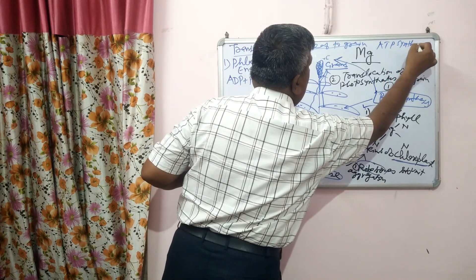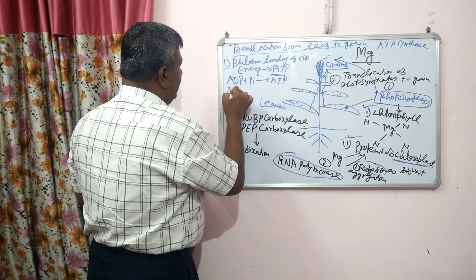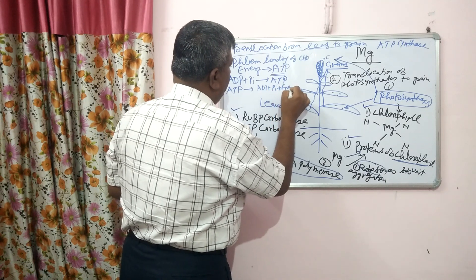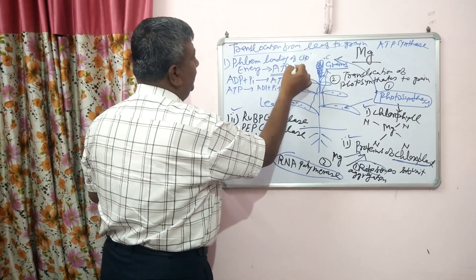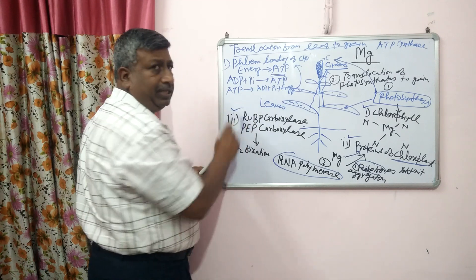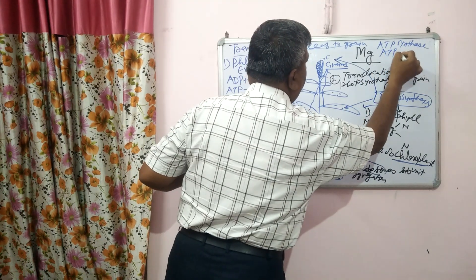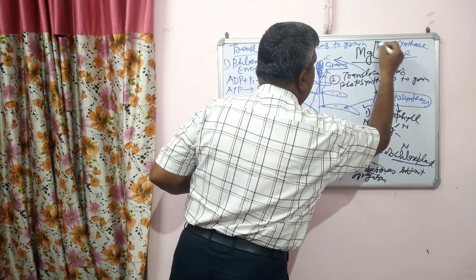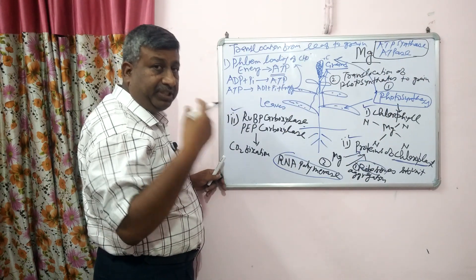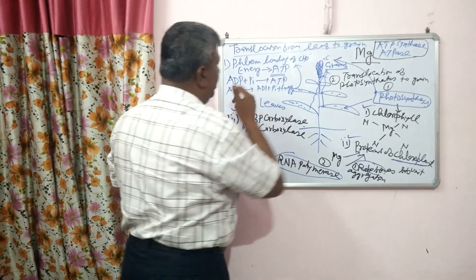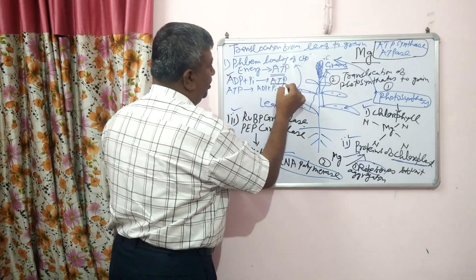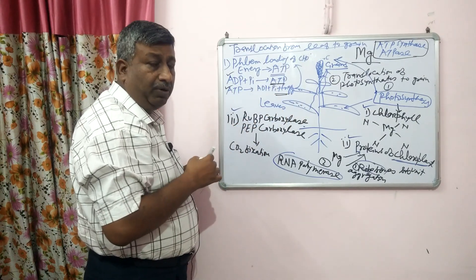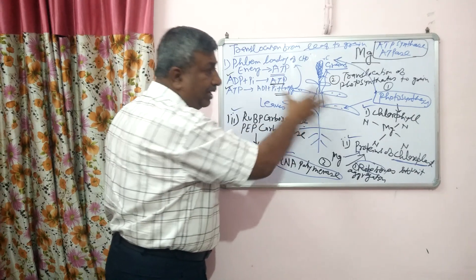ATP is hydrolyzed to ADP plus inorganic phosphate plus energy, and this energy helps in phloem loading. Both ATP synthase and ATPase enzyme activities require magnesium. So if there is a magnesium deficiency, these enzyme activities are reduced, ATP production is reduced, and energy for phloem loading is reduced. As a result, photosynthates remain in the leaf and are not translocated to the grain.